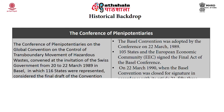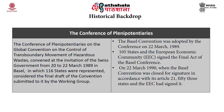A Conference of Plenipotentiaries on the global convention on the control of transboundary movement of hazardous waste convened at the invitation of the Swiss government from 20 to 22nd March 1989 in Basel, in which 116 states were represented. They considered the final draft submitted by the working group. The Basel Convention was thus adopted on 22nd March 1989. By 22nd March 1990, when the convention was closed for signature in accordance with Article 21, 105 states and the European Economic Community had signed the final act, and 53 states and the EEC had signed it.